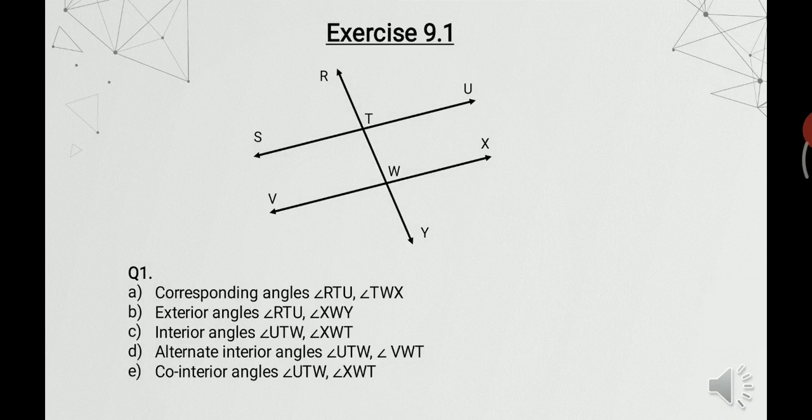We have already discussed the properties of these angles. I have given you the answers for each part, so you should be able to understand the answers on your own — consider this as part of your homework. Note that each part can have multiple answers. For example, in part a, the figure can have 4 different pairs of corresponding angles, but we have to mention only one pair as asked in the question.